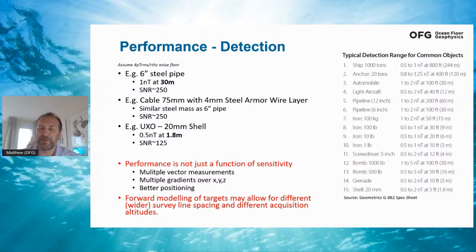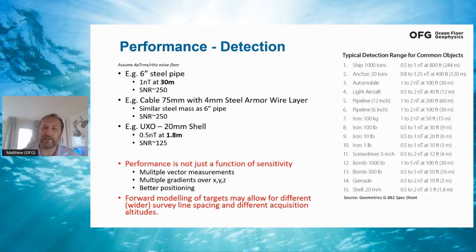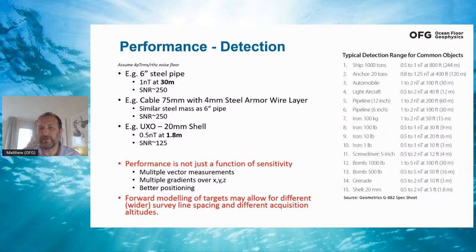The previous presenter talked about false positives and thousands of targets. By having these additional measurements — the total field as you'd get from a regular towed magnetometer plus other vector measurements — you can model what the response from particular items of interest would be before you go out and survey. For example, a gas canister in the seafloor, assuming it's steel, will have a certain response. These multiple measurements allow forward modelling, potentially lowering the number of false positives.